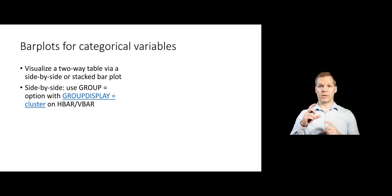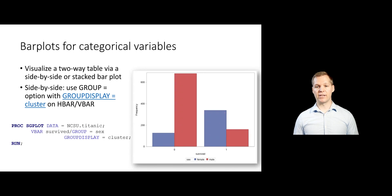If you don't want these bars to be filled, instead you want them to be a side-by-side bar plot, you can change how these groups are displayed by the group display equal option. So you can do group display equal cluster, and instead of putting them stacked, it's going to put them next to each other. And so this gives us a little bit clearer way to look at this two-way table. We can see that way more women survived than did men in our groups.